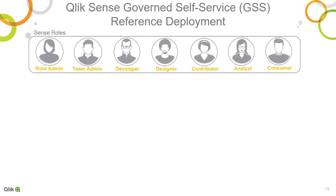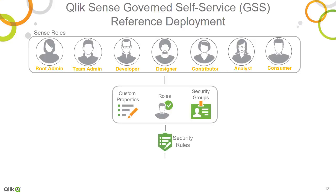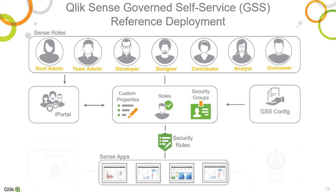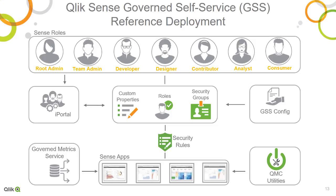Tying it all together, Qlik Sense delivers Governed Self-Service with roles you can create and customize to author, contribute to, and collaborate on Qlik Sense applications. The guardrails for the different roles are controlled by security rules that leverage security groups from existing directory services in the enterprise and custom properties managed in Qlik Sense. The iPortal is a tool for testing the results of the security rules, and the GSS configuration provides examples for establishing your Governed Self-Service deployment. The Governed Metrics Service integrates with your central repository of metrics to deliver governed definitions for dimensions and measures to Qlik Sense applications. QMC Utilities exposes additional management and workflow capabilities to support multi-developer scenarios and application lifecycle procedures. Together, the Qlik Sense Governed Self-Service reference deployment is a set of tools and guiding principles to deploy a flexible and governed business intelligence solution in the enterprise.